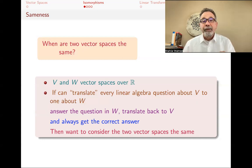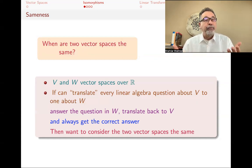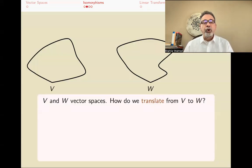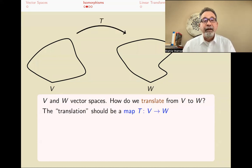Why would we want to do this? Because some vector spaces, like R^n, are much easier to deal with computationally — we can answer questions a lot quicker. If we can translate things to R^n, that would be very helpful. So the first question is: what do we mean by 'translate'? How do I translate from one vector space to another? The translation comes with a function, a map from V to W, and this is going to be a precise translation.